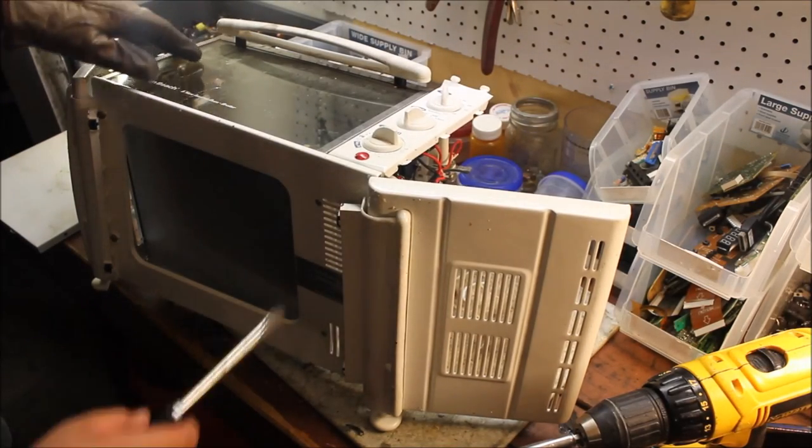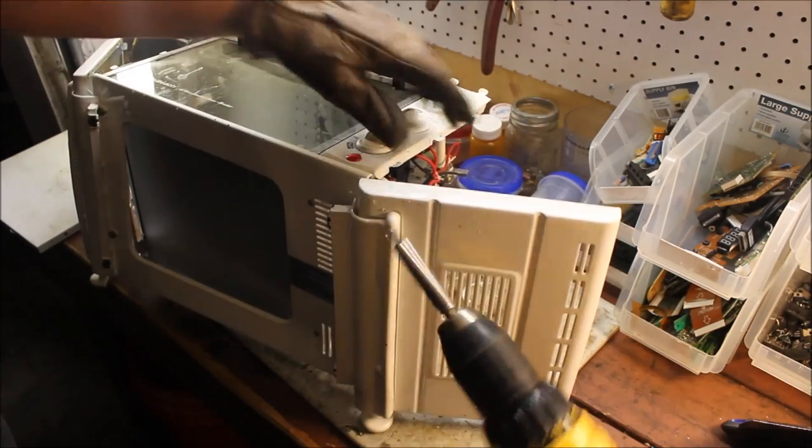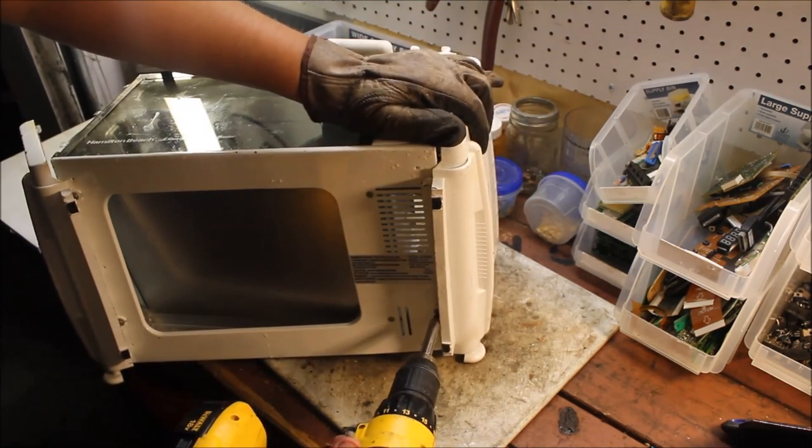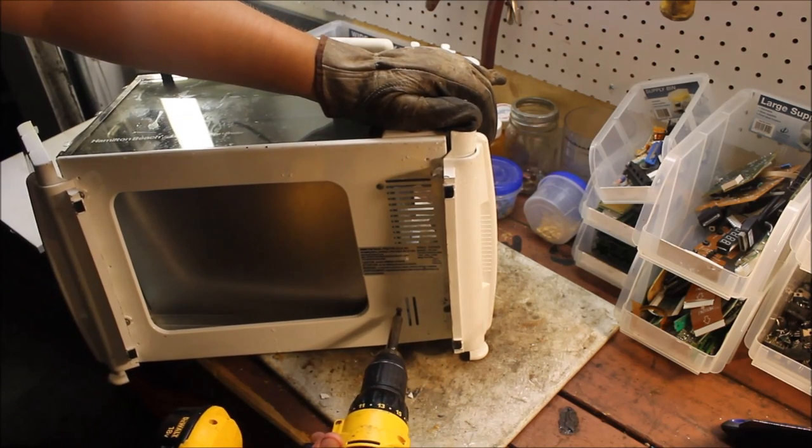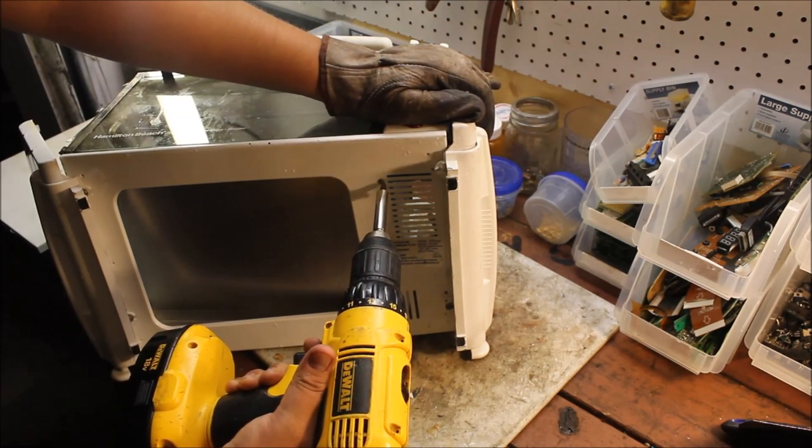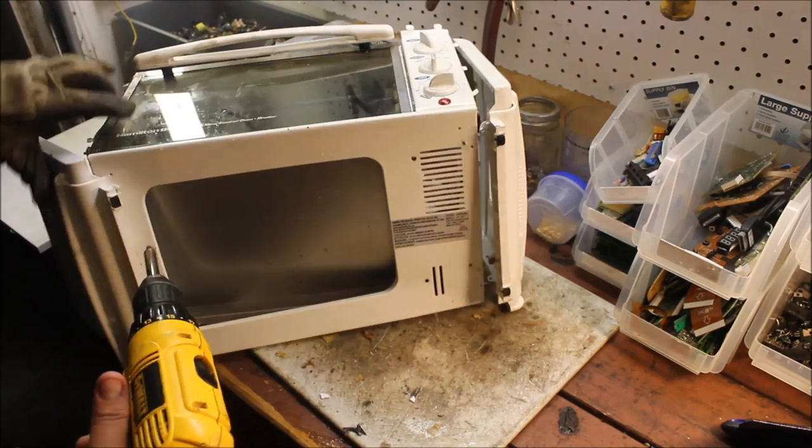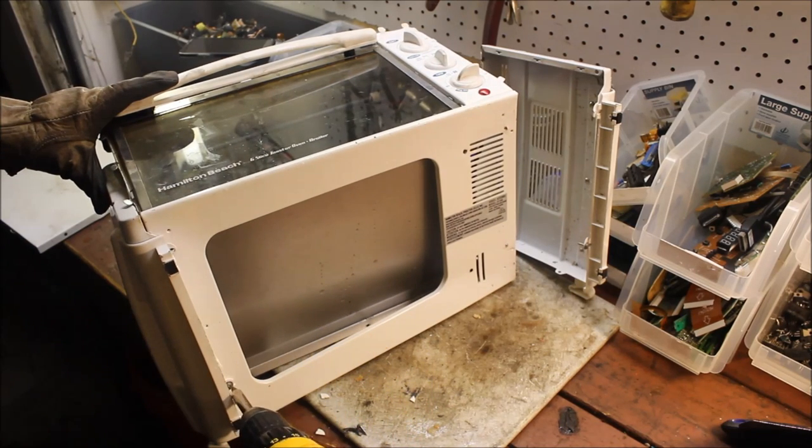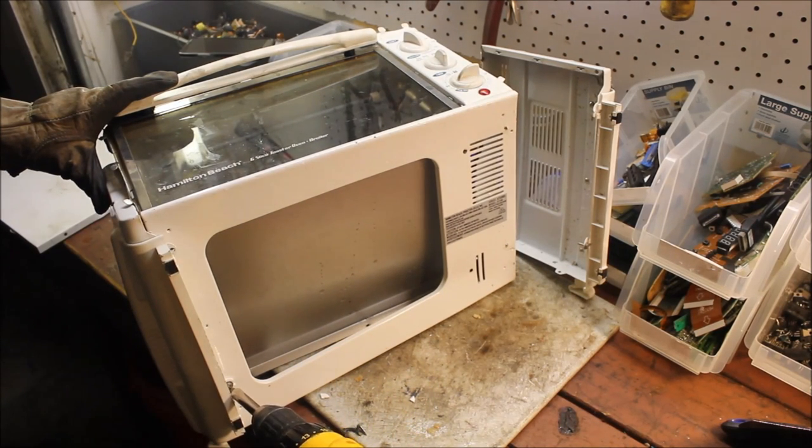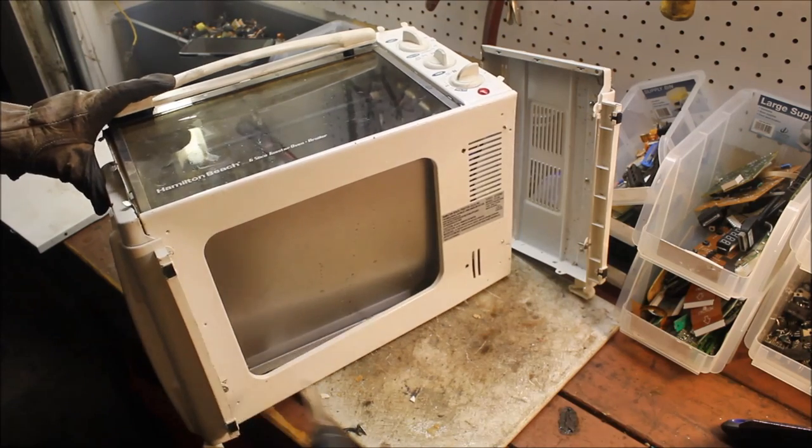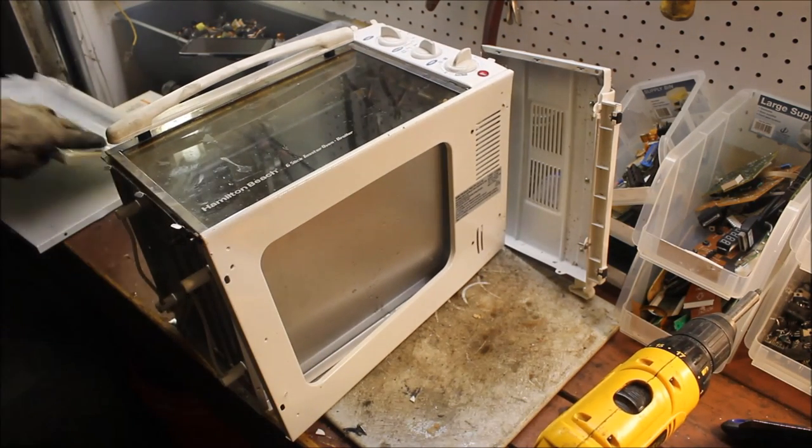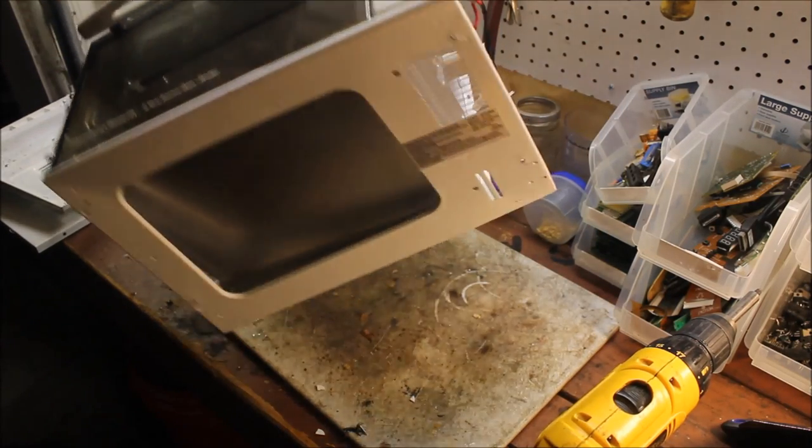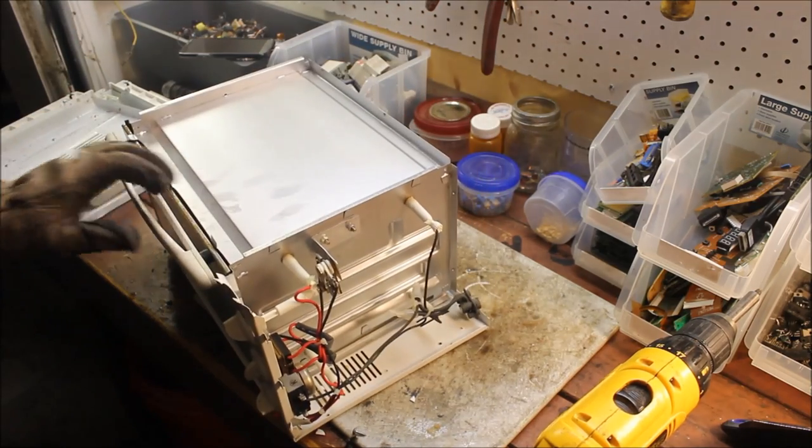So there's going to be some screws here I missed on the bottom. Probably should have taken all those out. That's pretty quick with this drill. No problem. Just pull around and take the rest out. Now it should really come apart. Here's the other side. Now we have this inner piece.